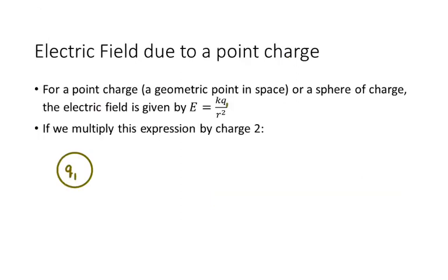If we have a point charge, or a sphere of charge, then the electric field equation we learned last time is E equals KQ over R squared. So if I draw charge 1 and think about the electric field surrounding charge 1, I can make that Q1 in the equation. If I then place Q2 in the electric field at distance R away from Q1, I can then find the electric force on charge 2 by multiplying charge 2 by the electric field caused by charge 1.